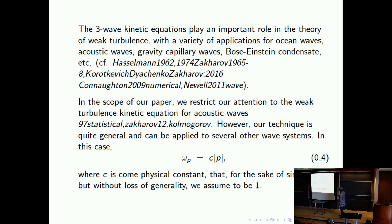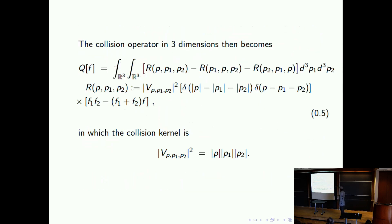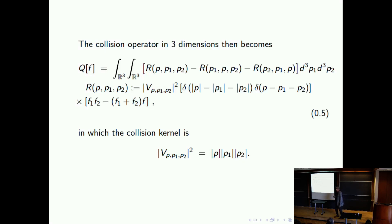We look at this dispersion relation — omega of p equals absolute value of p, taking the constant to be one for simplicity. We can write down the collision operator in three dimensions. This is R minus R minus R, and the collision term for the case I'm talking about is |p| · |p1| · |p2|. That's the model. The Hamiltonian system you start with has to be a quadratic acoustic wave equation, or water waves in three dimensions will give something similar.